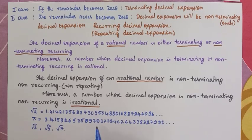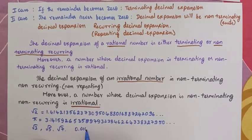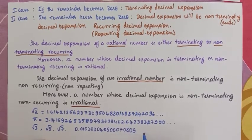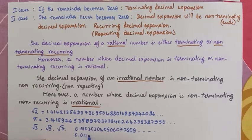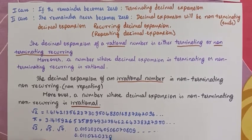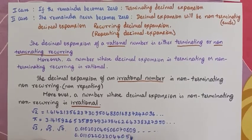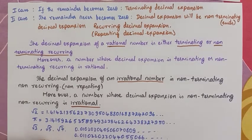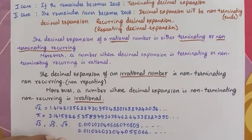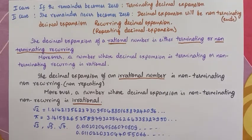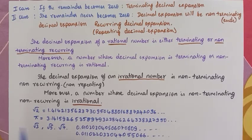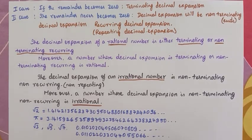We can write our own irrational numbers: 0.01, 020, 03, 04, 05, 06, 07, 08, 09, 010, 011, 012, and so on. Another example: 011, 022, 033, 044, 055, 066, etc. These are all examples of non-terminating and non-recurring decimal expansions. So, these are all irrational numbers.